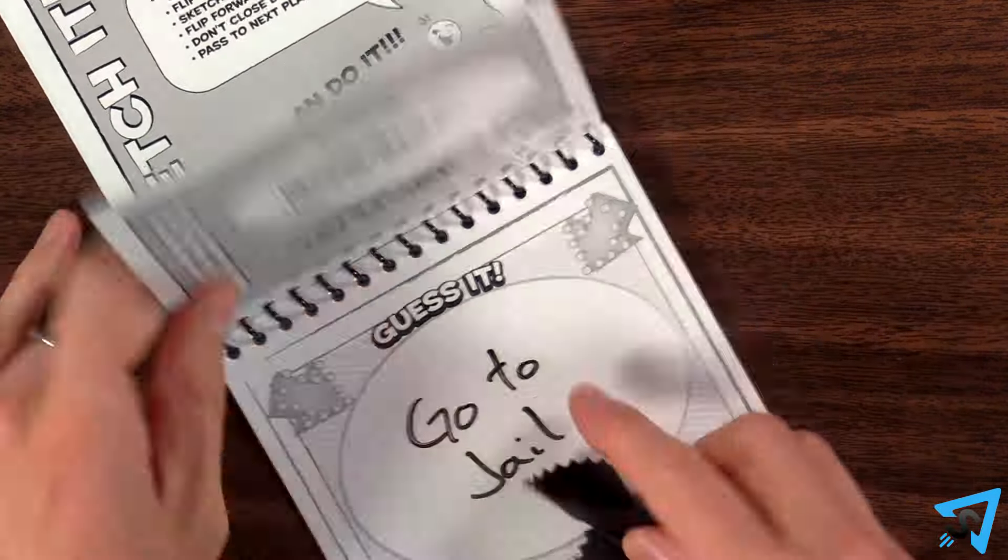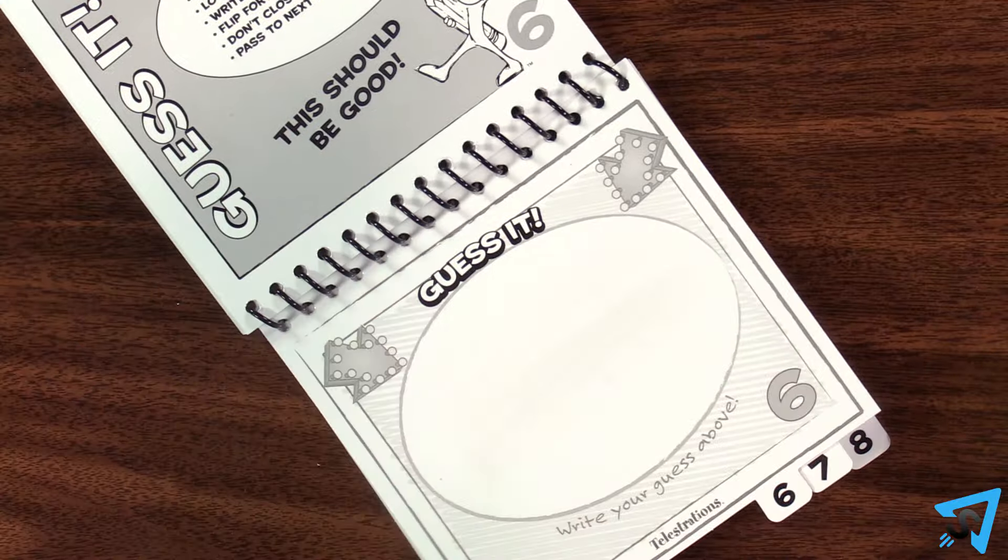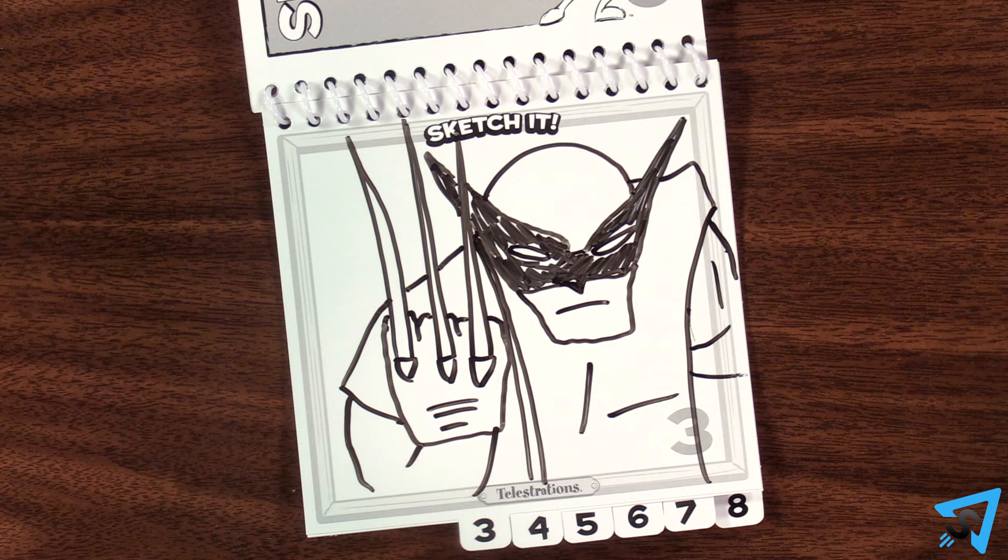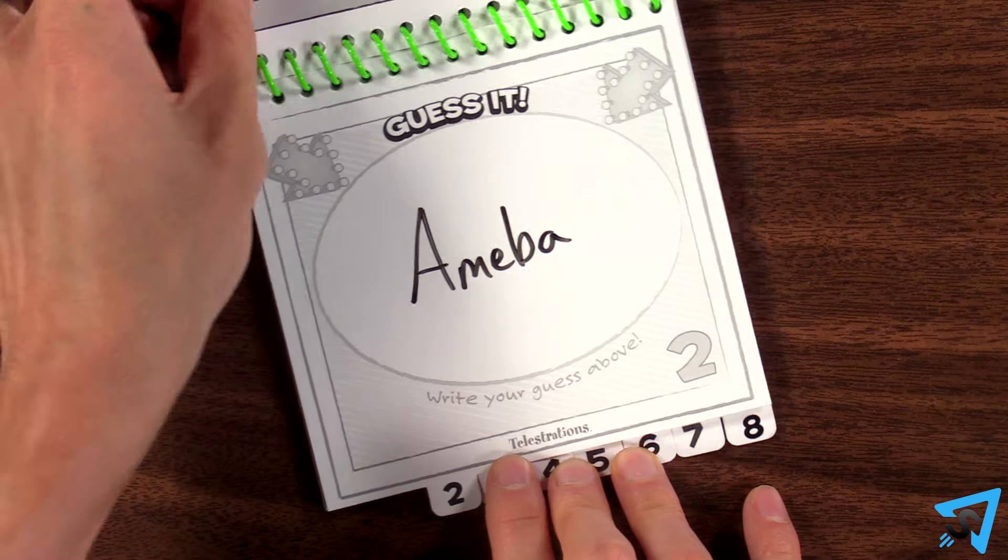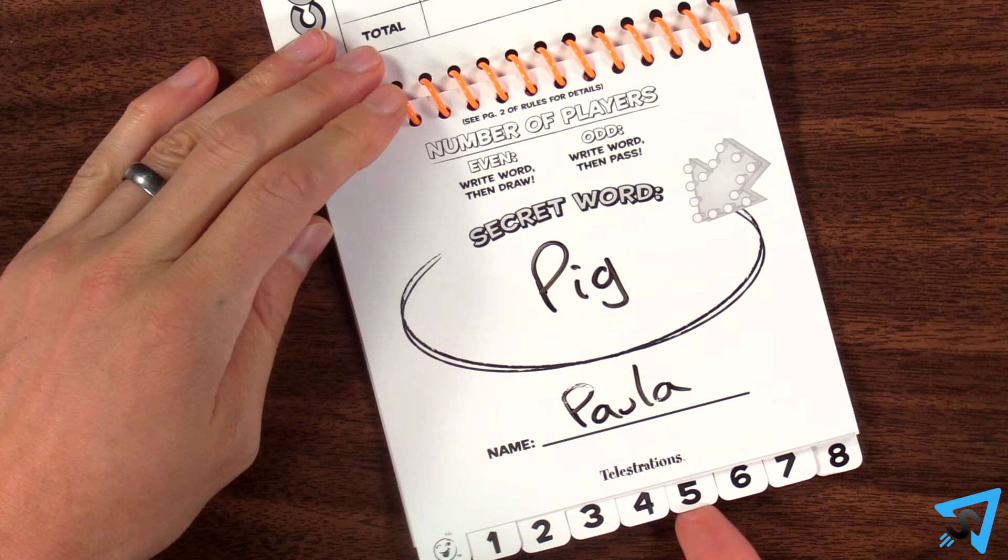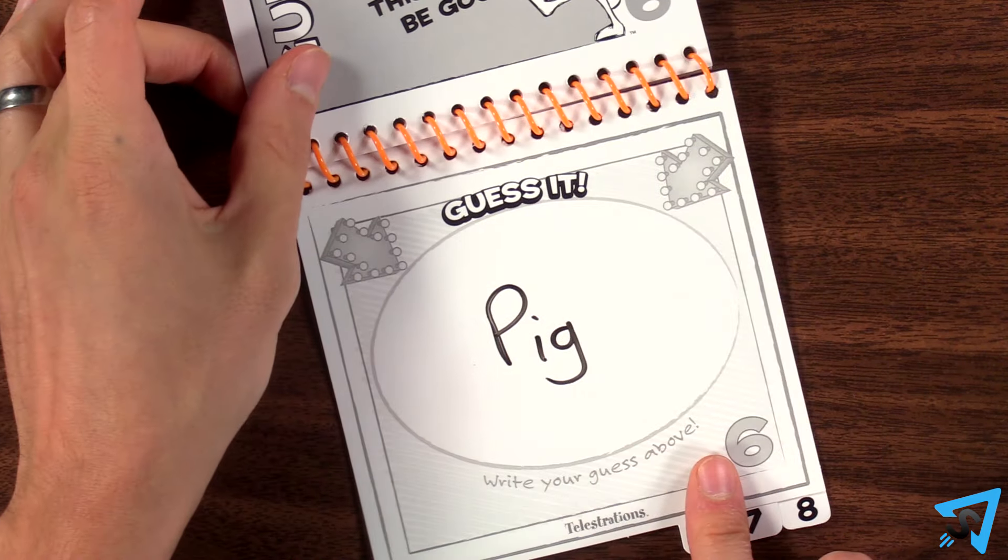If you want to play more competitively, you can play for points. At the end of each round, after you reveal the outcomes in your own book, give one point to the player with your favorite sketch in your book, one point to the player with your favorite guess in your book, and give yourself one point if the last guess matches the secret word.